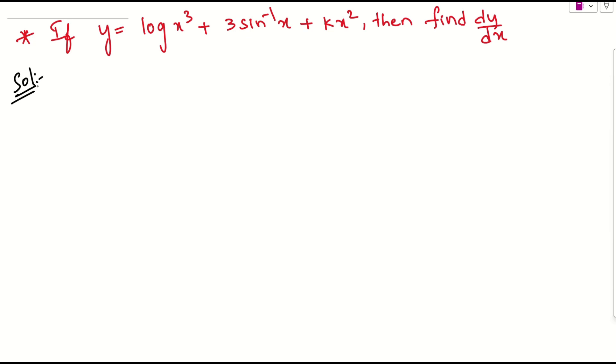Let us see how to solve this question. What is the question given here? y equals log x cubed plus 3 sin inverse x plus k x squared. Then we need to find dy by dx.